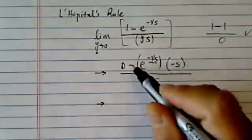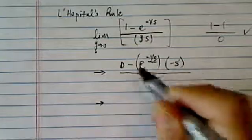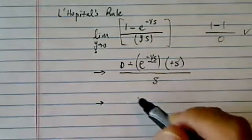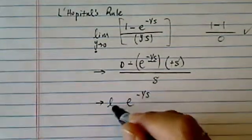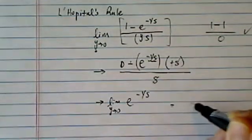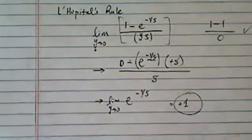Let's see what we have here. Minus minus cancels out, s and s cancels out. That's pretty nice in the end. So it's e to the minus s, and limit y to 0, and this one of course equals positive 1.